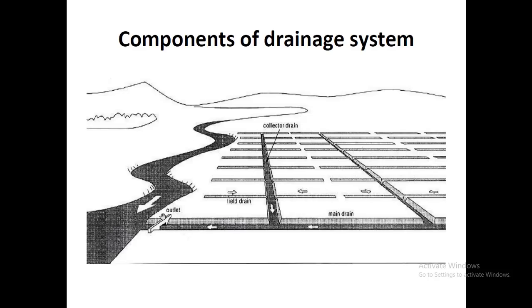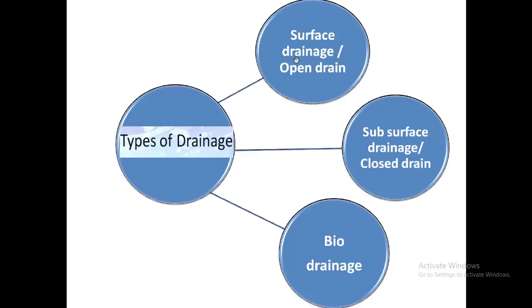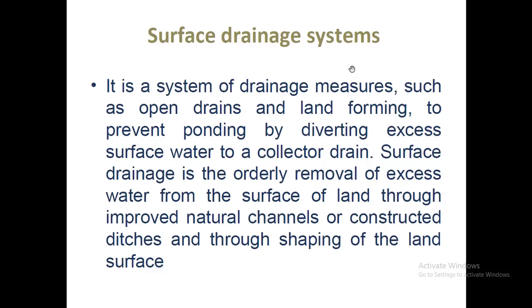The components of a drainage system include outlets, collector drains, and main drains. The main types of drainage are: subsurface drainage open drain, subsurface drainage closed drain, and bio drain. We will mainly focus on the first two types. A surface drainage system is a system of drainage measures such as open drains and land forming to prevent ponding by diverting excess surface water to a collector drain. Collector drains are provided at the sides and the ground is shaped so that water flows easily to them.